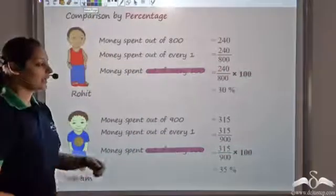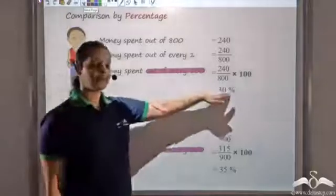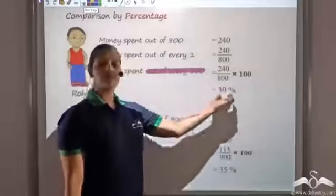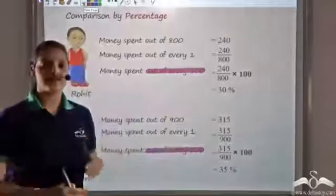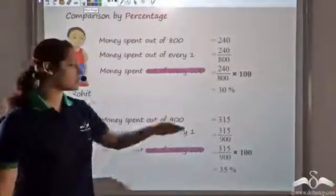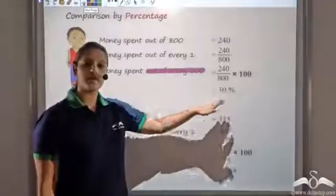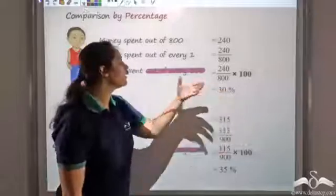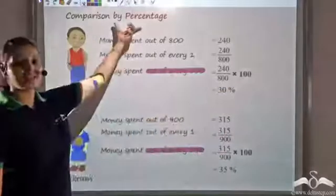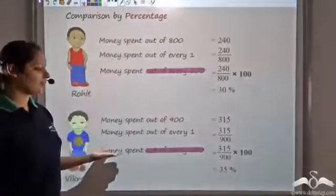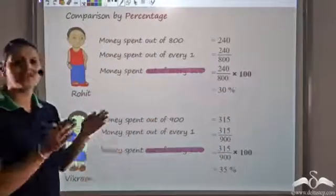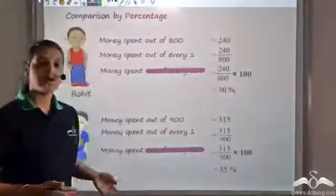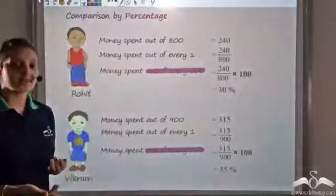So we get 30 percent and 35 percent. Now these are not small numbers — we do not have decimals, we do not have fractions, we have whole numbers, which is what we prefer. So percentage is a better way of comparing when the numbers are too small. This is how we find percentage.